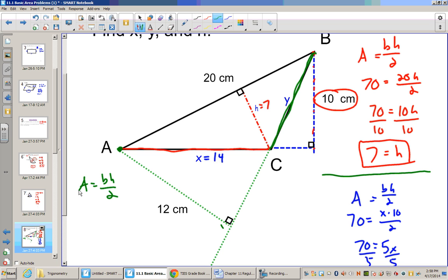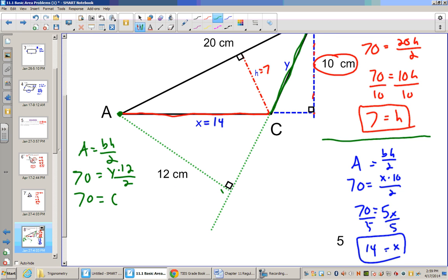Area equals base times height divided by 2. The area is still 70. The base now is y. The height is 12. And divide that by 2. So 12 divided by 2 is 6.